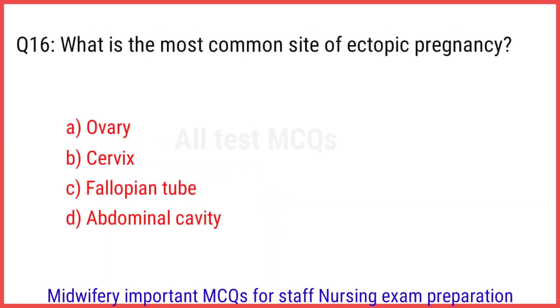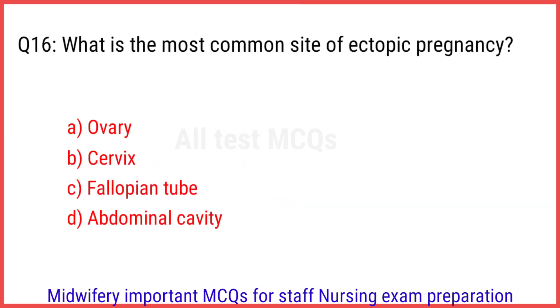Q16. What is the most common site of ectopic pregnancy? The right answer is option C: Fallopian tube.